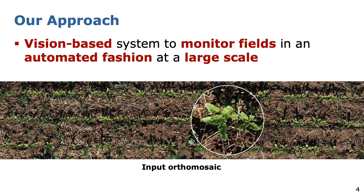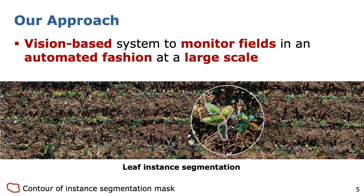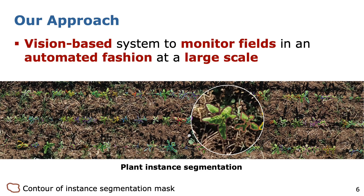Vision-based systems, on the other hand, offer the potential to monitor fields in an automated fashion based on images of unmanned aerial vehicles at a large scale more frequently. The input to our approach is an orthomosaic which covers entire fields as shown in the following figure. Based on the orthomosaic, we perform a leaf instance segmentation for all crops as shown here. Note that we only show the contour of each instance segmentation mask for reasons of clarity. Simultaneously, we associate all leaves to their associated plant to compute a plant instance segmentation. This method provides plant scientists and breeders with crucial information for detailed field monitoring.